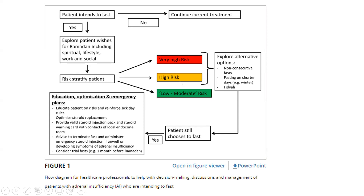The risk categories are: low to moderate risk — like a green signal; high risk — like an orange signal; and very high risk — a red alert. In scenarios where there is very high or high risk, we should explore alternative options like non-consecutive fasting, fasting only some days, or trial fasting on shorter days or only when the fasting period falls during winter times. Or if none of that is possible, then to give Fidya — basically giving money or donation of food for those in need.